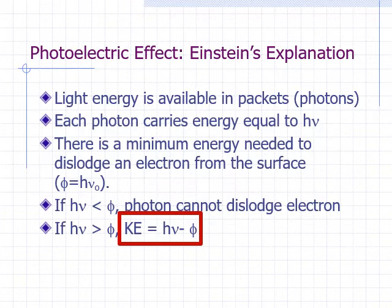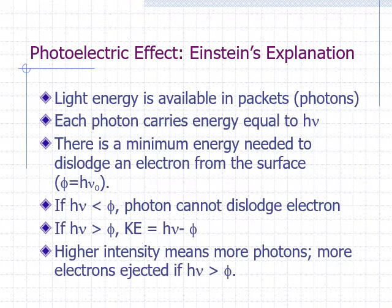Higher intensity simply means more photons. For as long as the photon energies are big enough, more photons will cause more electrons to be ejected. If the photon energies are not big enough, it doesn't matter how many photons collide with the electrons, the electrons will not be dislodged from the metal.